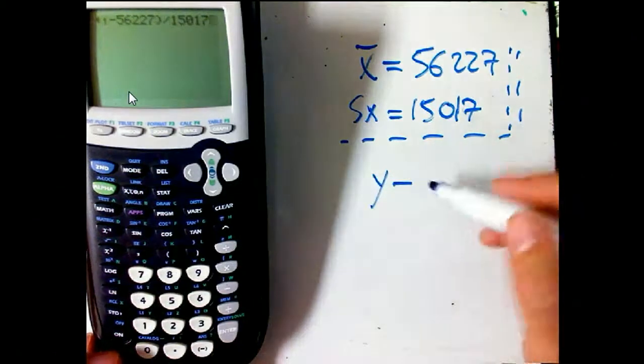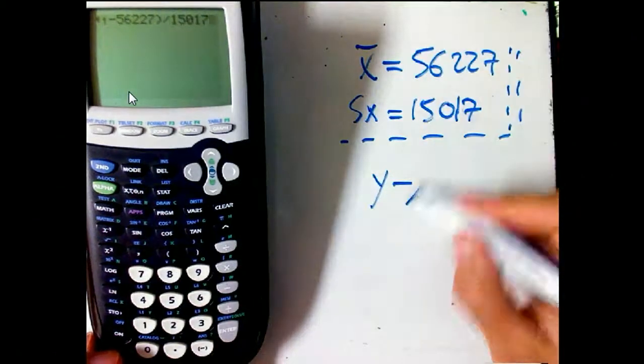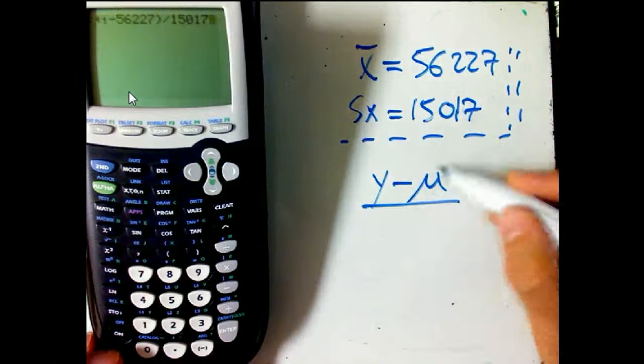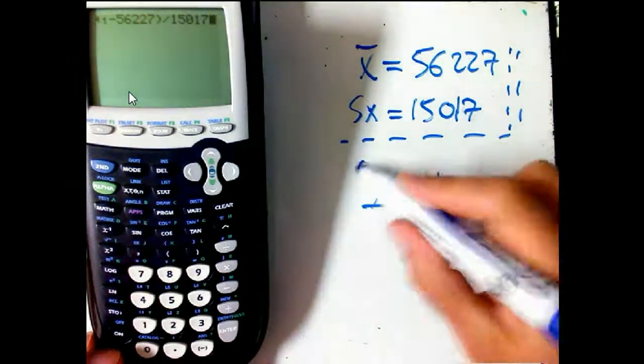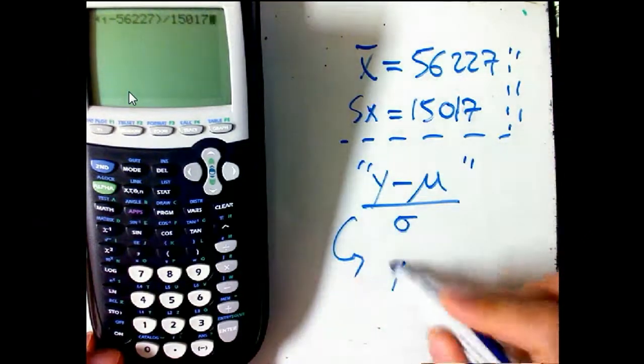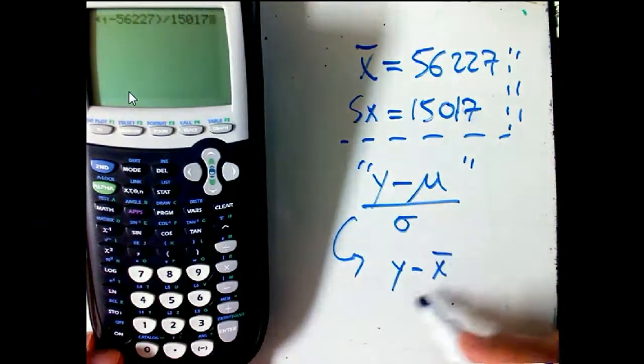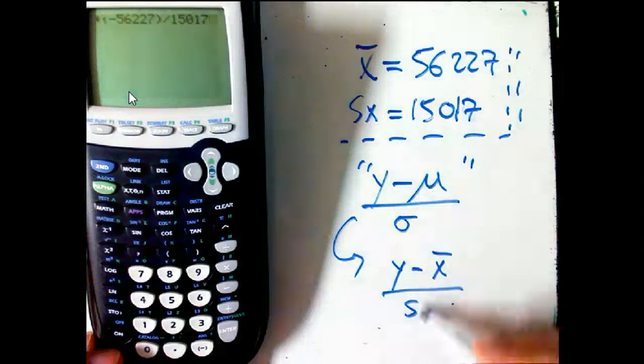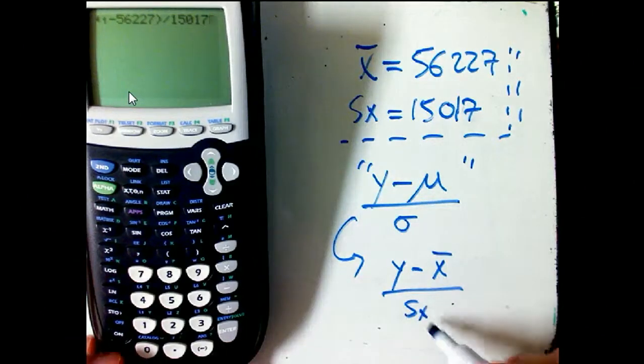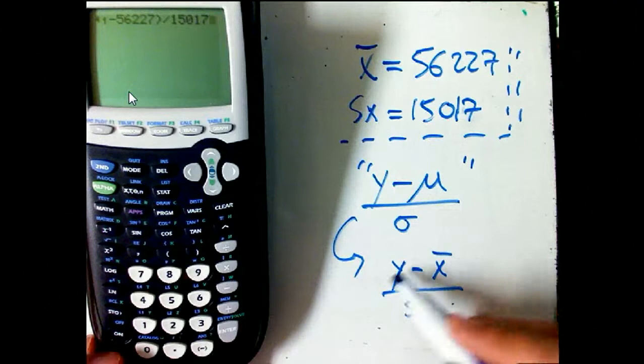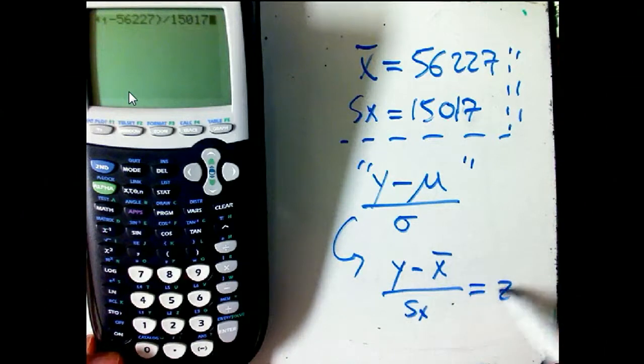And so this is the formula that we have in the book, y minus—now they use the mu and the sigma, because those would be predicted from the model. We're doing something a little bit different, which is we're actually getting them out of the data, and the book's calling it Sx, which is a little bit of a weird notation, but that's okay. And that's going to be the z-score for us.